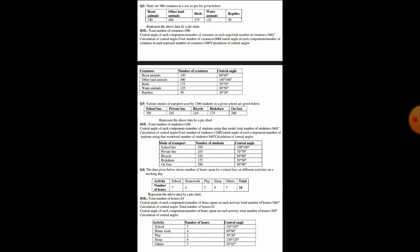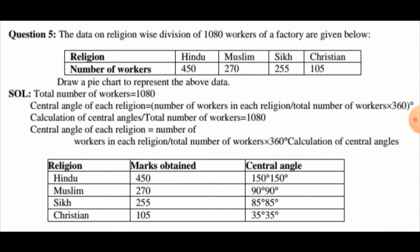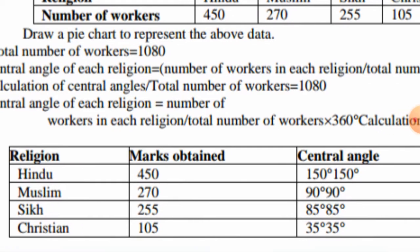In question number 5, data on religion-wise division of 1,080 workers in a factory is given: Hindu 450, Muslim 276, Sikh 255, Christian 105. We have to draw a pie chart to represent this data.